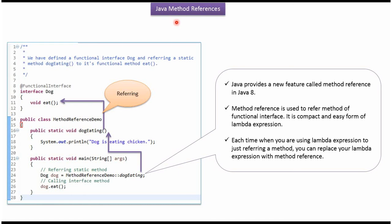In this video tutorial I will cover method reference in Java. Here I have defined the functional interface Dog. It has a functional method eat. Here I have defined the class MethodReferenceDemo. It has a static method dogEating.